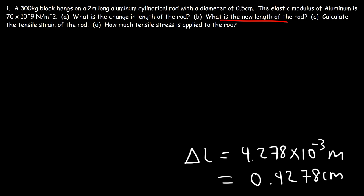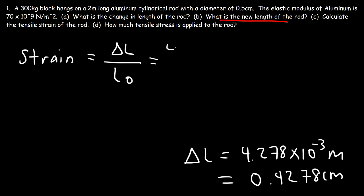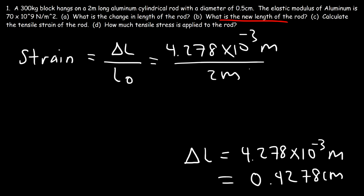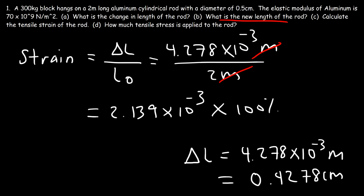Now what about part C? Calculate the tensile strain of the rod. The tensile strain is equal to delta L divided by the original length — that's 4.278 times 10 to the minus 3 meters divided by 2 meters, giving 2.139 times 10 to the minus 3. Notice that tensile strain is unitless. If you want to turn this into a percentage, multiply by 100%, so the length really changed by about 0.21%.